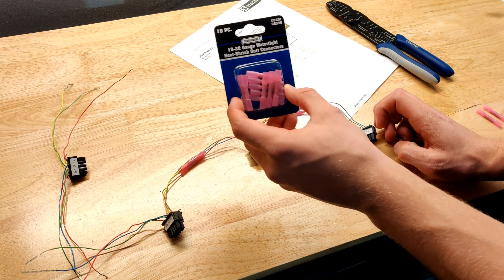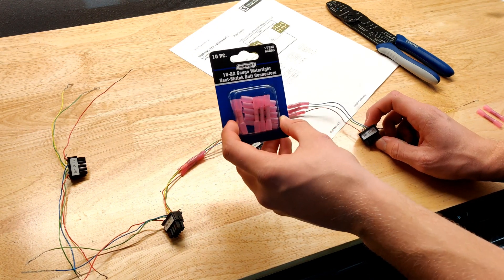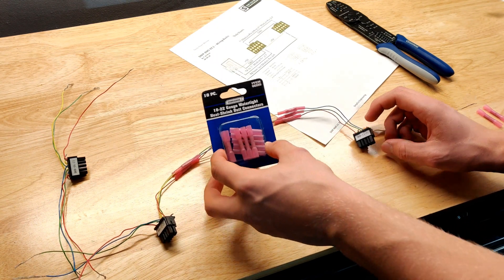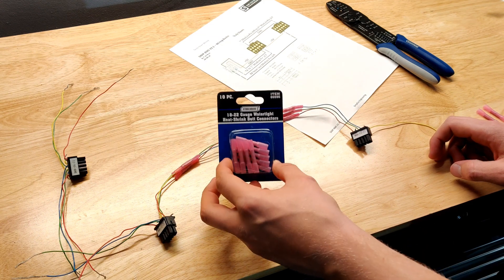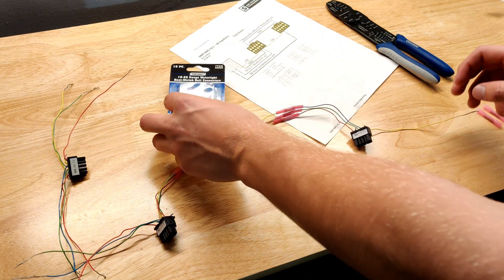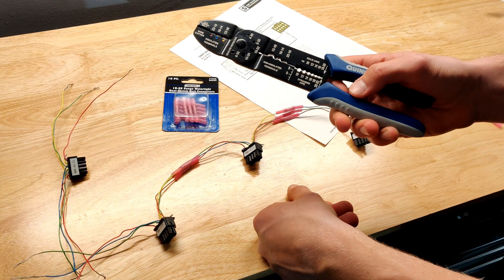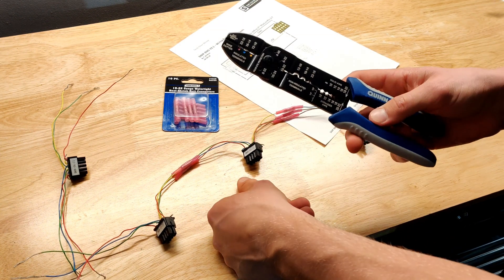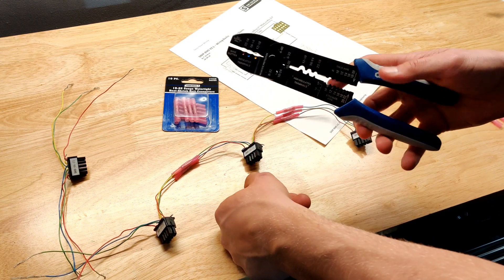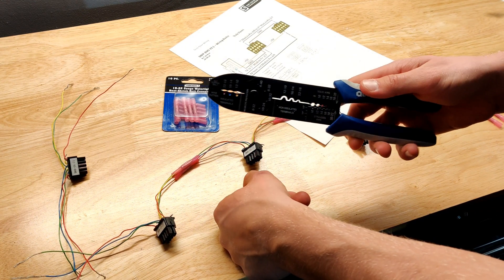And to make the connections, I'm using these butt connectors from Harbor Freight, 18 to 22 gauge. They're really cheap, only about $2 for a 10 pack or $1.50. And then this crimping tool, which also can strip wires and cut wires. And this was about $7 at Harbor Freight also.